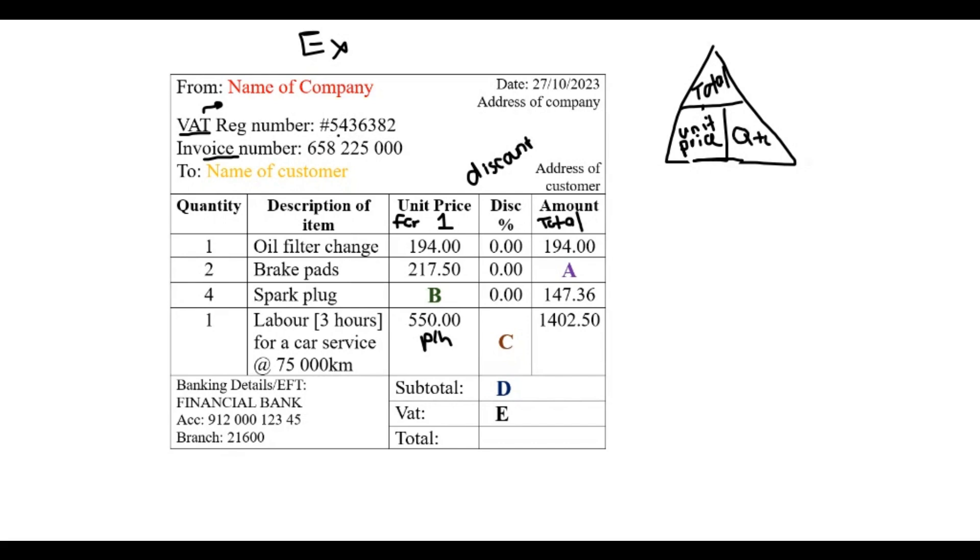If I am looking for the total amount, I would just multiply the quantity and the unit price. If I'm looking for one of these bottom ones, I would just take my total amount and divide - I would divide by the unit price or divide the total by the quantity.